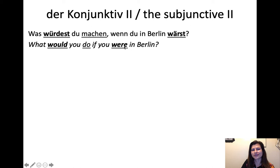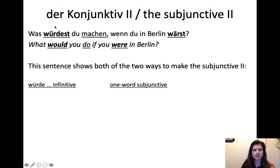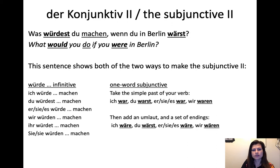The important thing to note: wärst means "would be" — it still has the "would" in it. But in English, you don't use "would" in the if-clause; it just looks like past tense. So we have two ways to do the Konjunktiv zwei: würde plus infinitive, and the one-word subjunctive like wärst, which still means "would" even though it's a single word. The hypothetical meaning is still there.